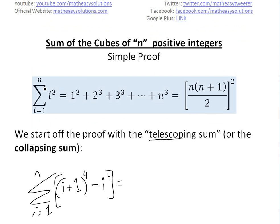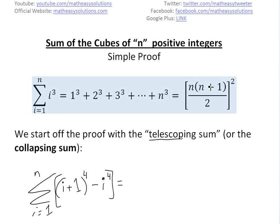Basically, I have sigma, i is initially 1, up to n of i cubed — 1 cubed plus 2 cubed plus 3 cubed, all the way to n cubed. The sum is going to equal n times n plus 1 divided by 2, all to the power of 2.